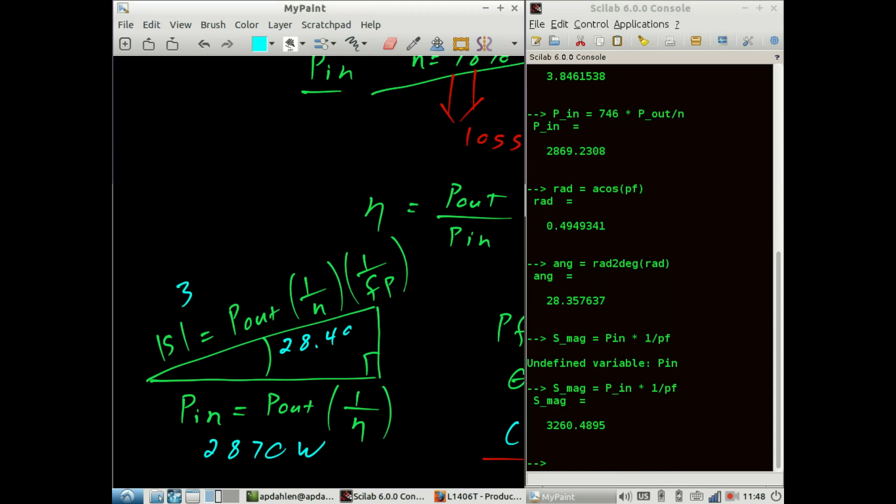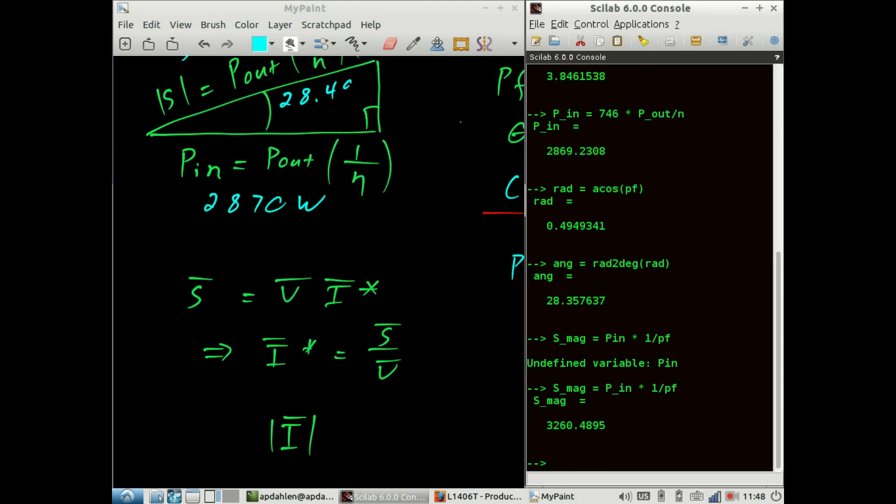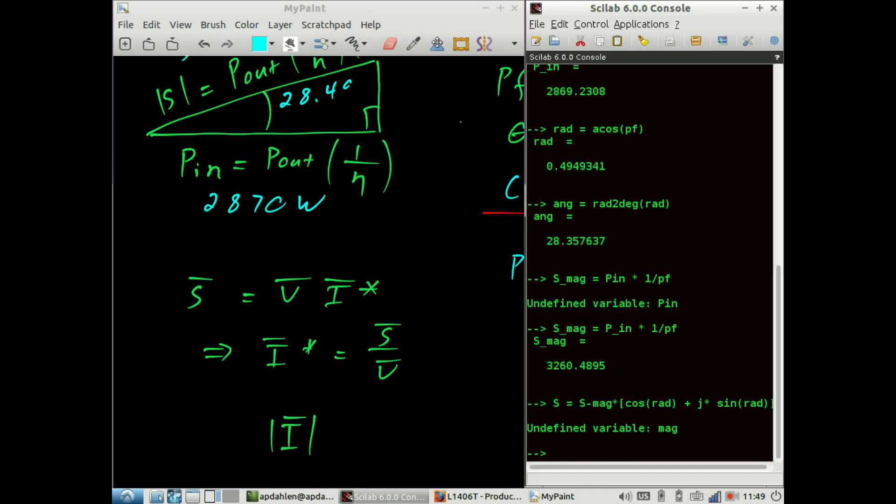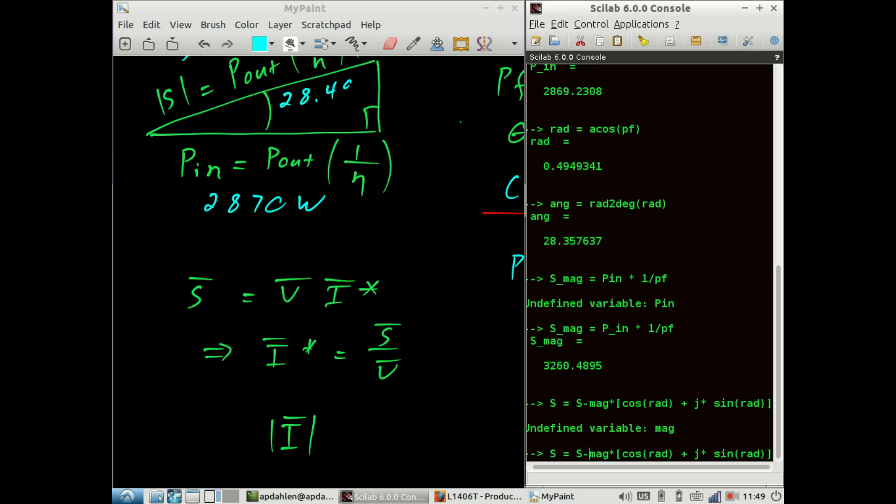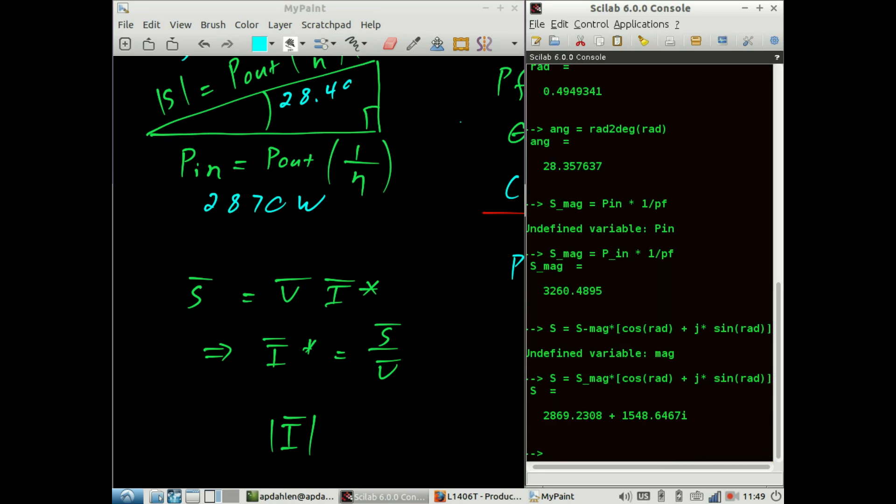So that's 3260 VA. And now we can enter S. S is equal to magnitude of S times cosine of the radians plus j times sine of the radians.